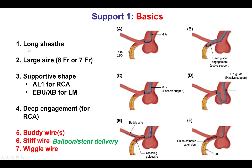In general, using longer sheaths provides better support. Larger guide catheters, such as 8 French or 7 French, give stronger support as well, especially if they are of a supportive shape. For example, for the right coronary artery, we routinely use AL1 — that is Amplatz Left 1 — guides for intervention, because they provide very strong support, much more so than the JR4 guide catheter.